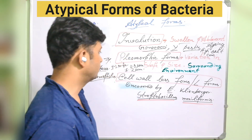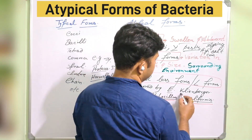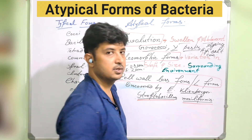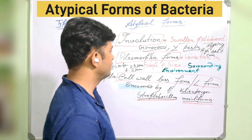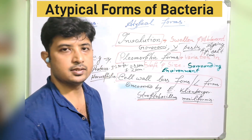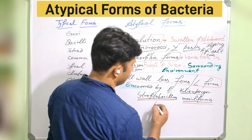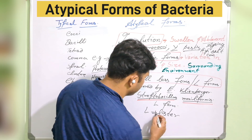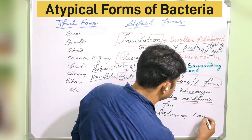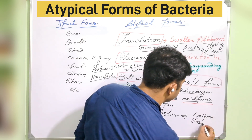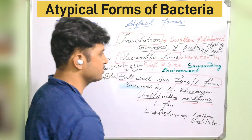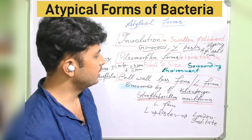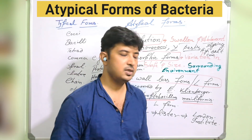Now coming to the most important third type of atypical form: cell wall-less forms, also called L-forms. This was discovered by E. Klieneberger during her work with Streptobacillus moniliformis. While working with that particular bacterium, she discovered that some bacteria are cell wall-less. She gave them the name L-form, where 'L' stands for Lister — the Lister Institute in London. The name of that London institute was taken to describe this group of bacteria.